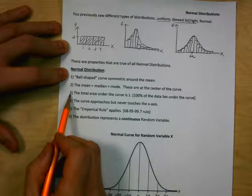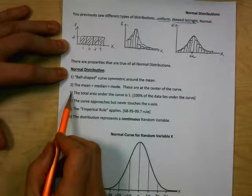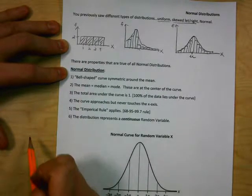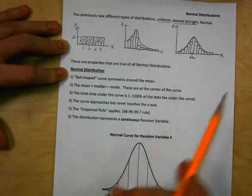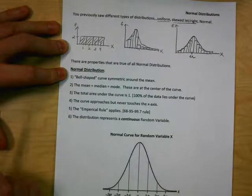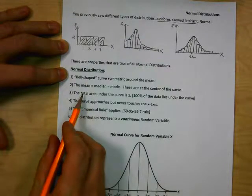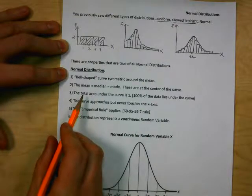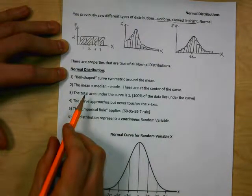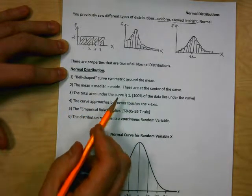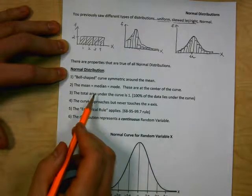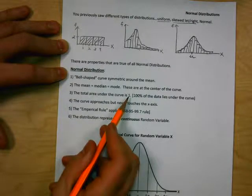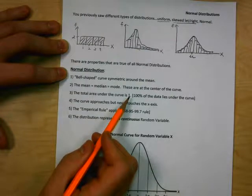The third property is a mathematical concept: the total area under the curve is one. The basic way to think about that is that 100% of the data lies under the curve — 100% of the data is represented within those bars. So 100% corresponds to one: 50% is 0.5, 70% is 0.7, and so on. In terms of probability, the total area corresponds to probability — so when you look at 100% of the data, the probability of any possible outcome is 1, or 100%.